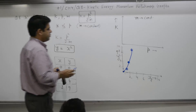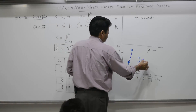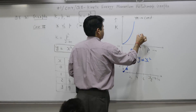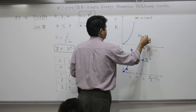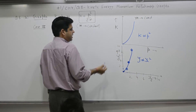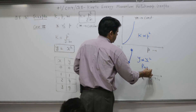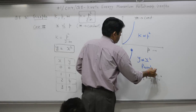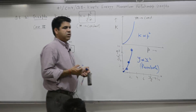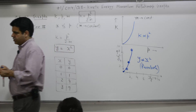Joining these points gives a graph where y is proportional to x². This is a parabola symmetrical about the y-axis. So the K–P graph is a parabola symmetric about the y-axis. One minute to complete.